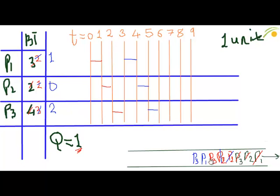Now it is P1's turn. P1 will perform its operations for one unit of time, that is quantum Q, and it will join the queue. Now it's P3's turn. P3 will perform its operations for one unit of time, that is quantum Q, and it will join the queue again.